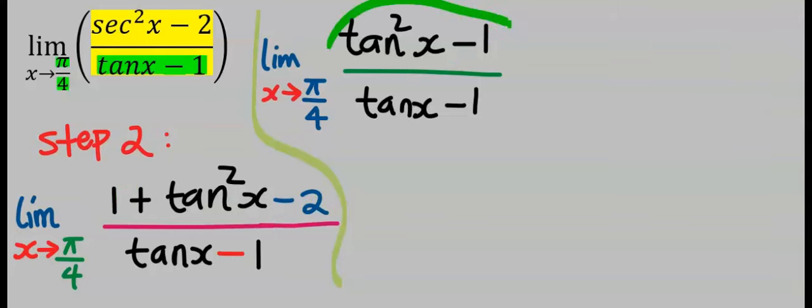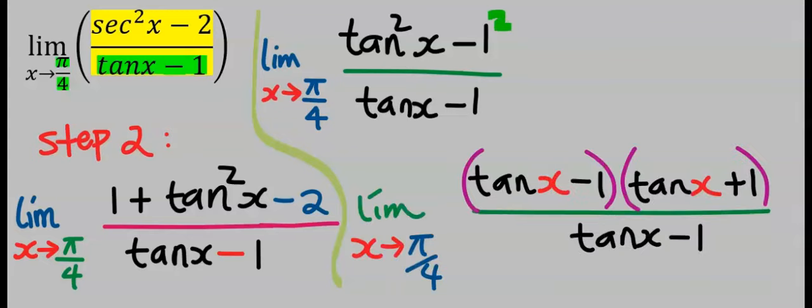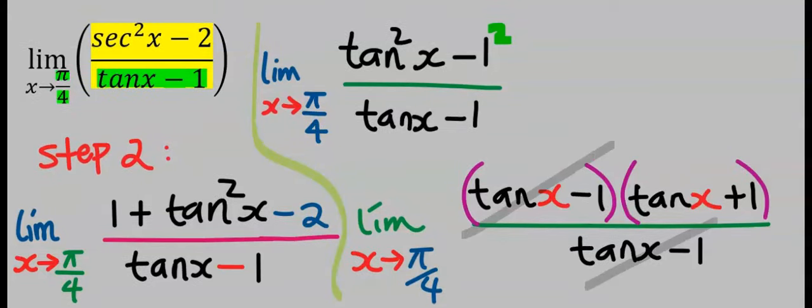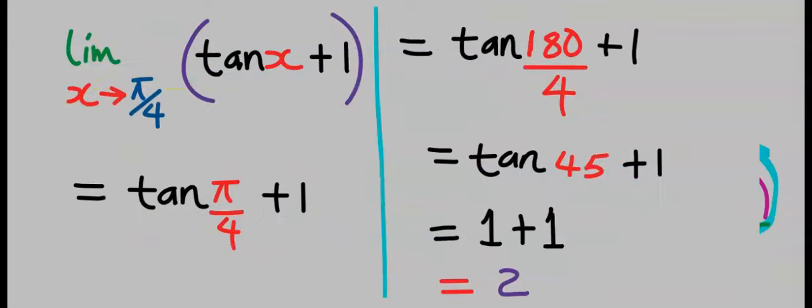Next, we can apply difference of two squares to this function because one squared is the same thing as one. Applying difference of two squares, this can take away this. Next, we'll now take the limit of the remaining function. Our answer is two.